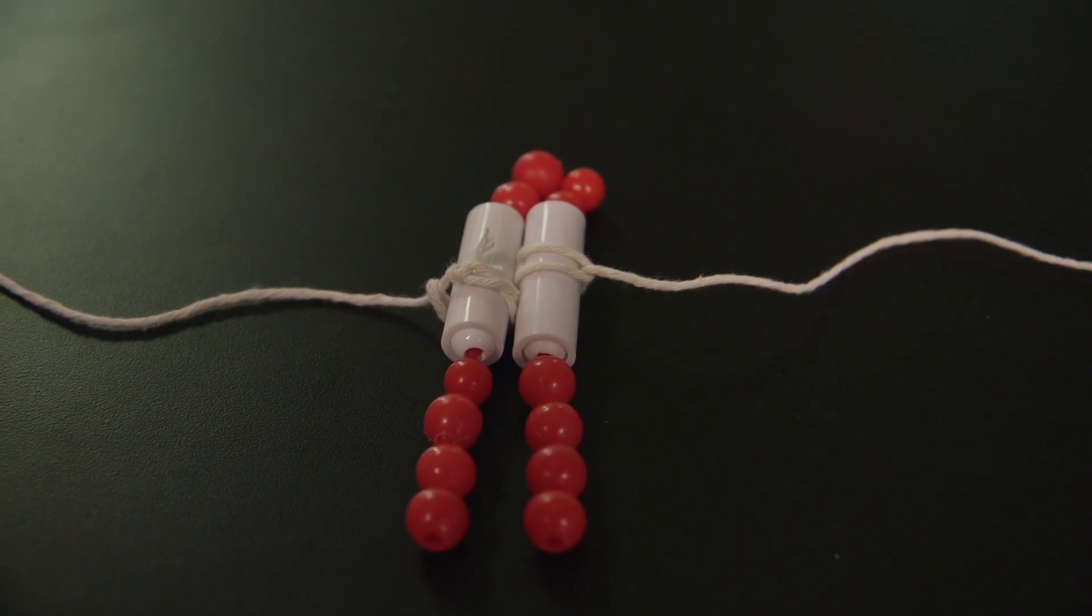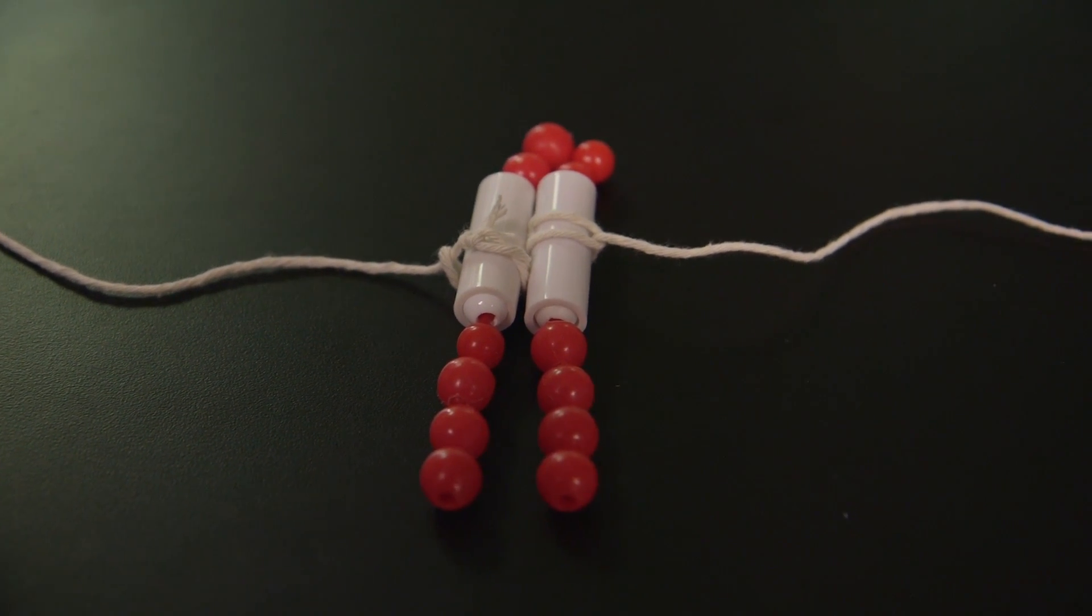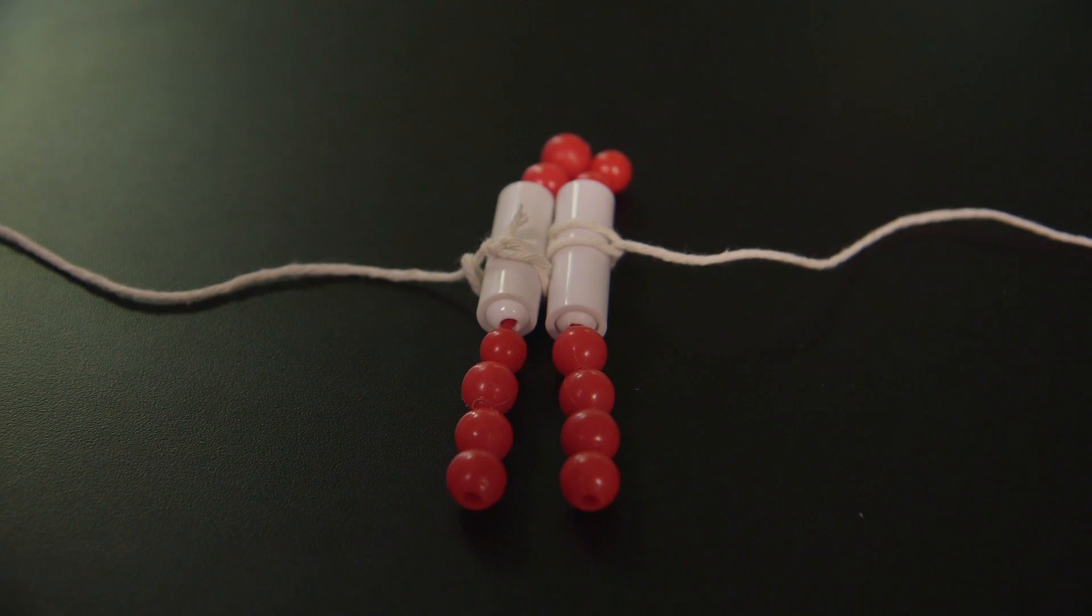In reality, the replicated chromosome does not have a double centromere, but in order to replicate the chromosomes, we must use two magnets. This is a limitation of the bead model.